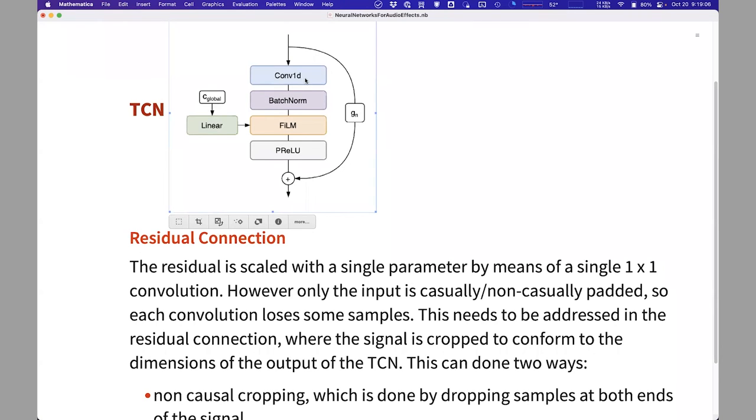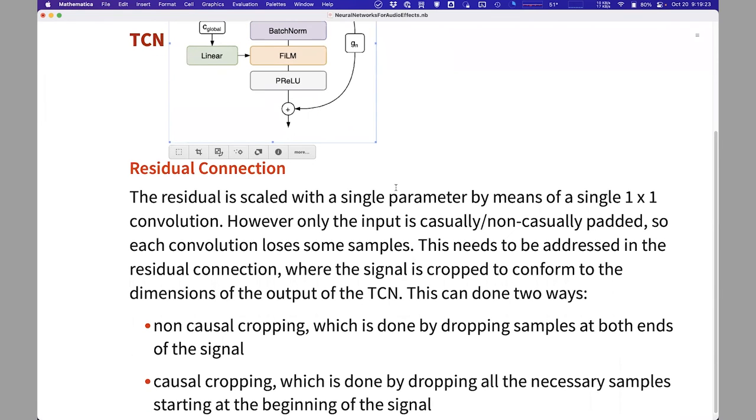However, this convolution in the TCN loses some samples. So the padding happens only in the first layer, all the other ones drop a few samples. So we need to do some cropping of the skip connection to ensure that the dimensions are the same. And the cropping can be done causally or not causally. So we can drop stuff at the beginning or we can drop stuff both ends.